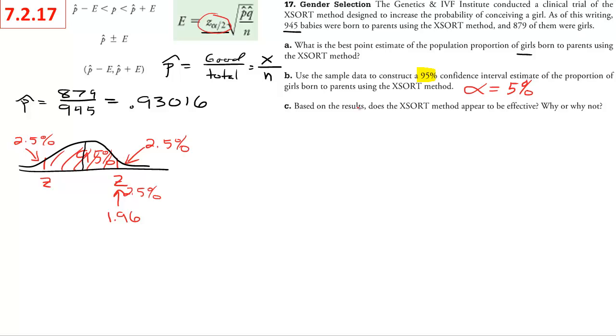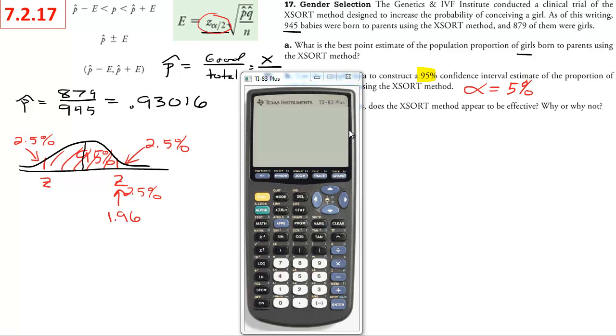So we can write that down. According to the table, 1.96. But tables aren't perfect, right? They are inaccurate. They are normally rounded, so we can do a little bit better if we want to use technology.